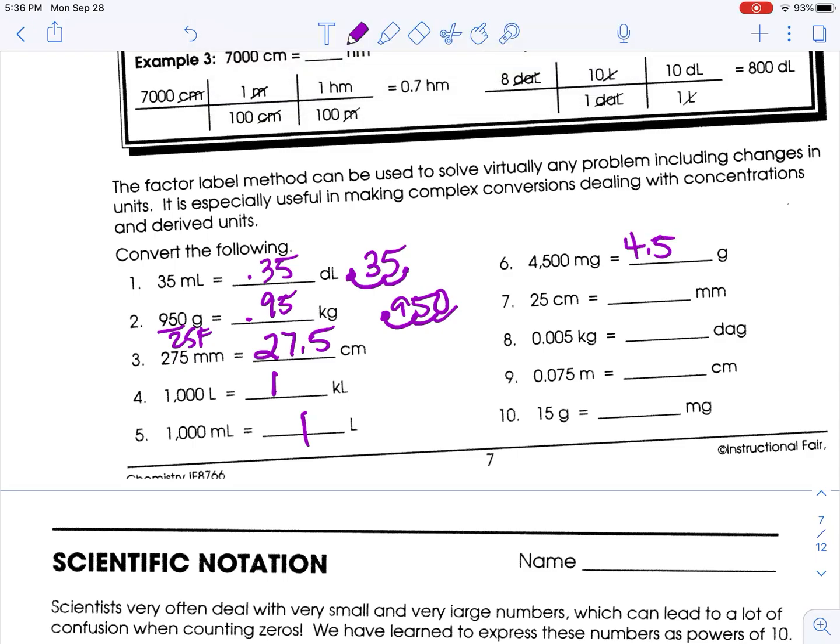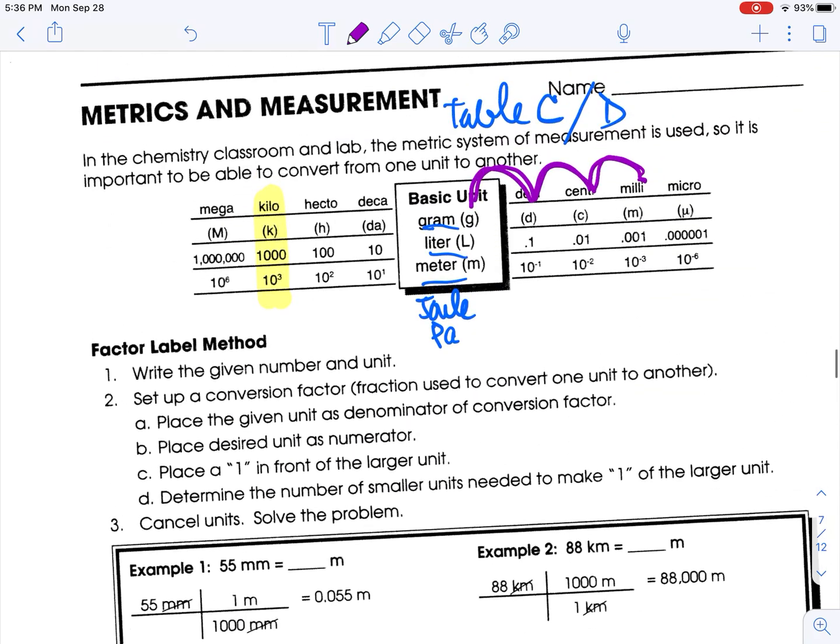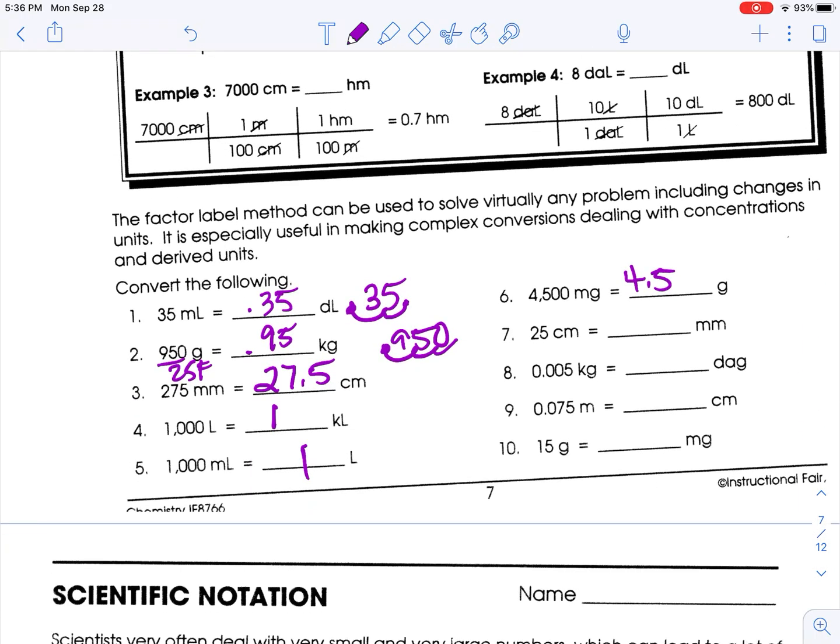Then we have centimeters to millimeters. Centimeters to millimeters is one spot to the right. So we have 250 millimeters.